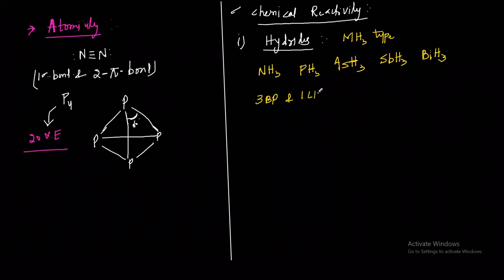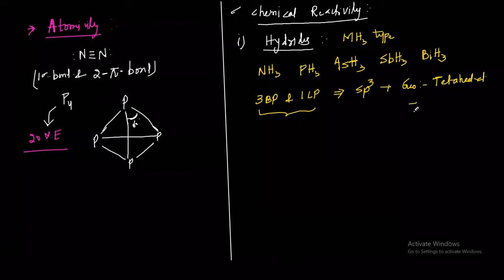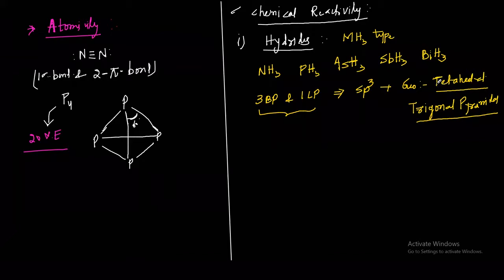Since there are three bond pairs and one lone pair, the steric number is 4 and hybridization is sp3. The geometry is tetrahedral but the shape is trigonal pyramidal. Geometry and shape are the same only when there are no lone pairs present.